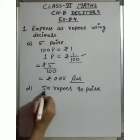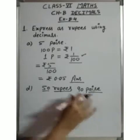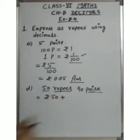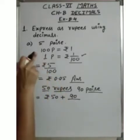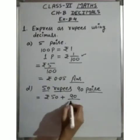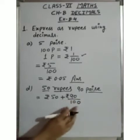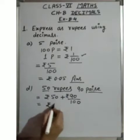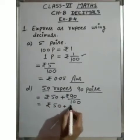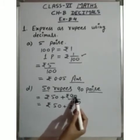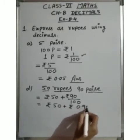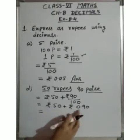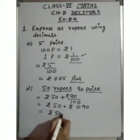50 is already in rupees, so we write Rupees 50 as it is, plus 90 paise. To convert paise to rupees, we divide by 100. So 90 paise = 90 upon 100 = Rupees 0.90. Then we add Rupees 50 + Rupees 0.90. The answer is Rupees 50.90.